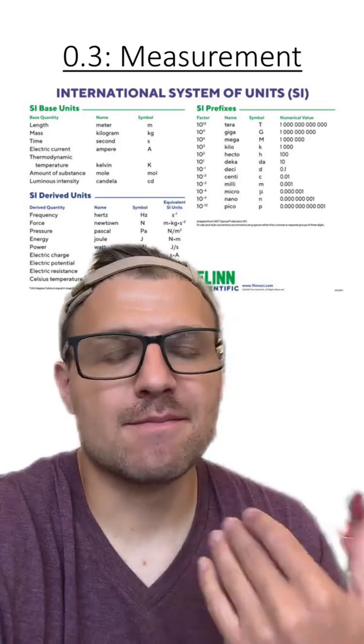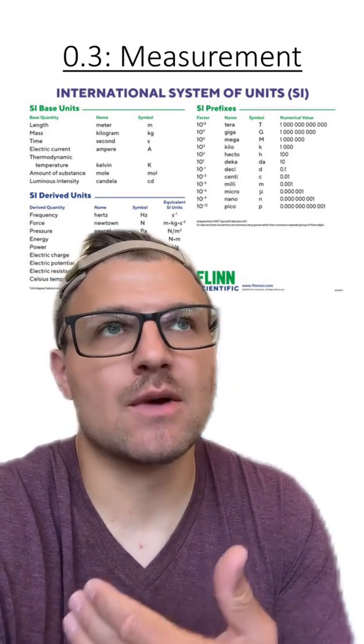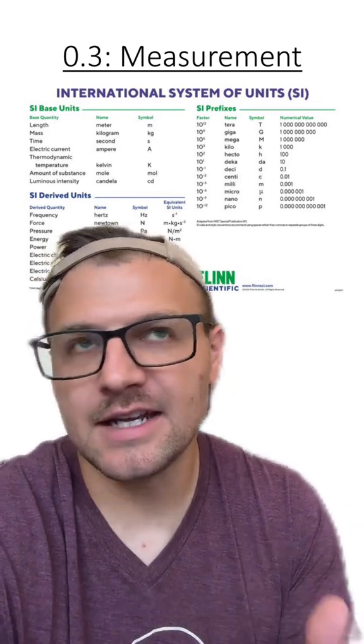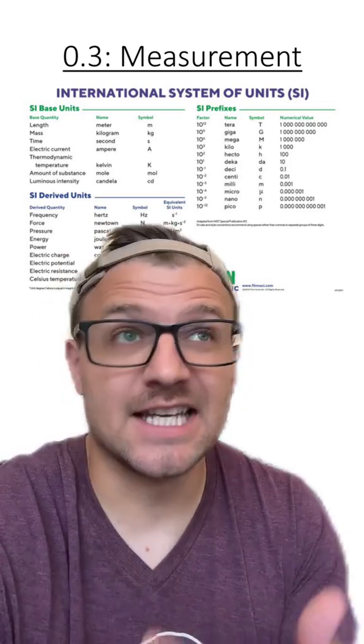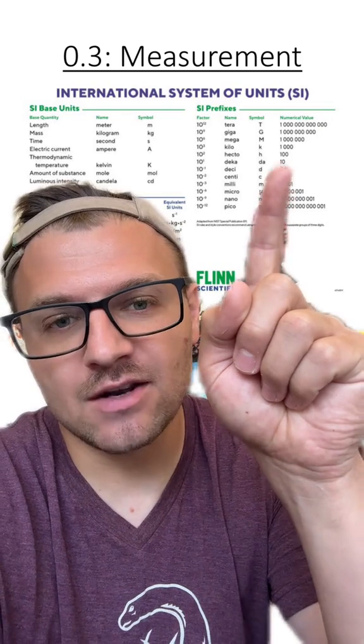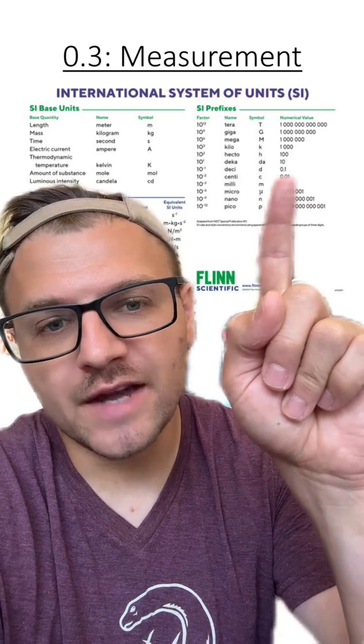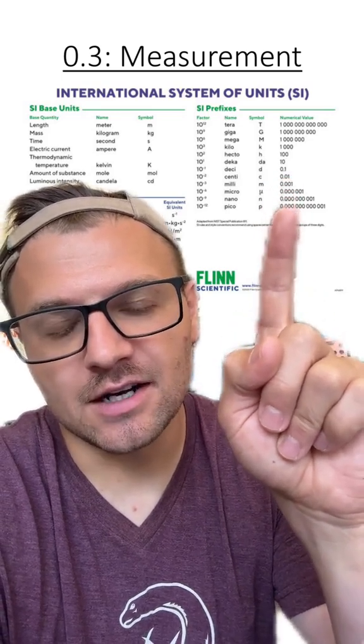Now when I say that the metric system or the SI system uses a base 10, what it means is that we have to multiply or divide these numbers by 10 to get to the next level. As you can see here, we just have to multiply it by 10 on each one of these going up to get to the next level. When we get smaller, we have to divide by 10. You can see what that looks like here.